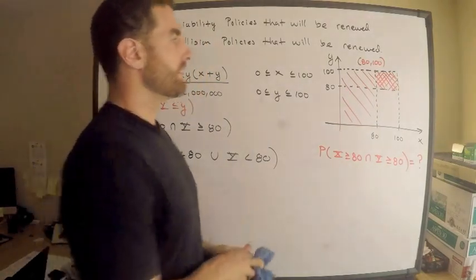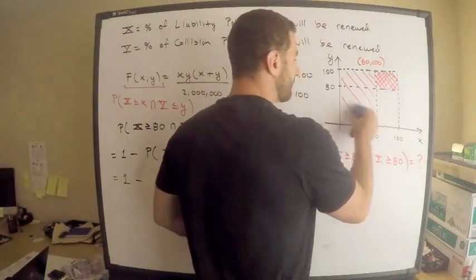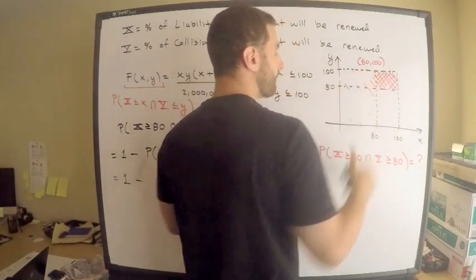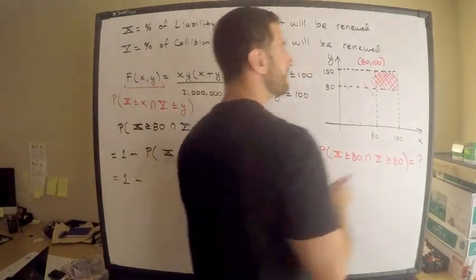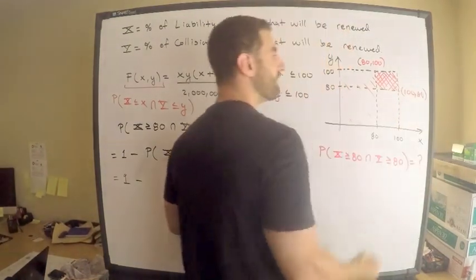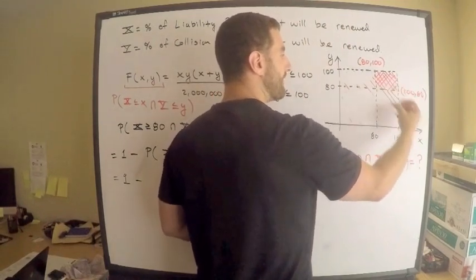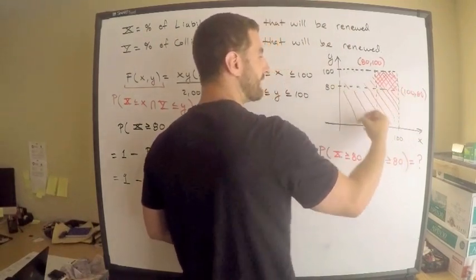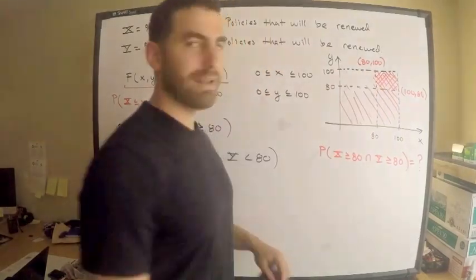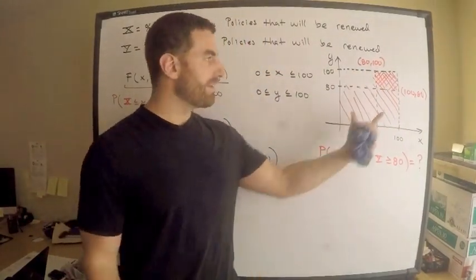Well, that doesn't take care of everything, does it? Now, after that, what I'll do is I'll then compute this point over here. This point right here is 100 comma 80. So what I'll do after that is I'll compute the probability that X is less than 100 and Y is less than 80. That will give me this rectangle.